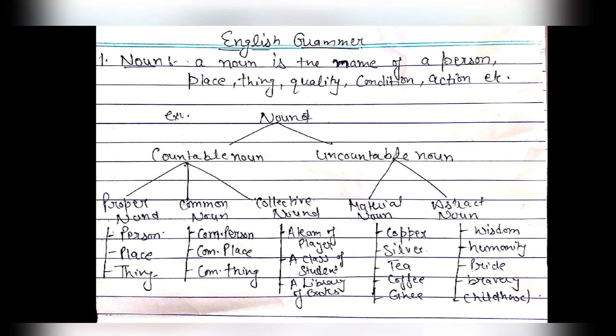In any sentence, if there is a name of a person, place, or thing, or a quality, condition, or action of someone, we call that a noun. Noun has two types: countable noun and uncountable noun. A countable noun is one that can be counted, while an uncountable noun can only be measured.